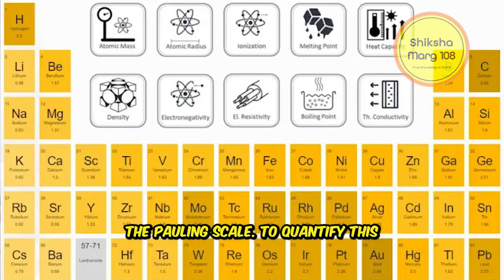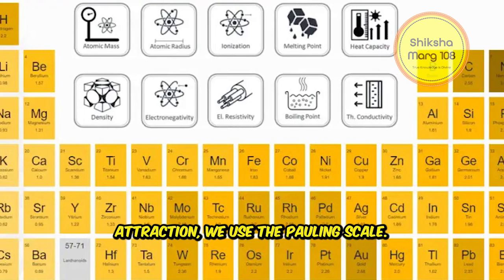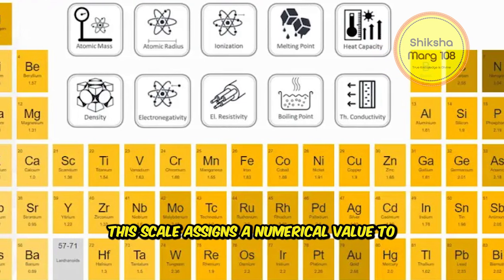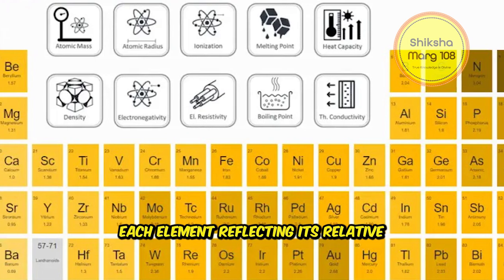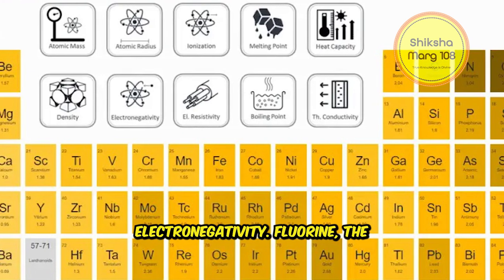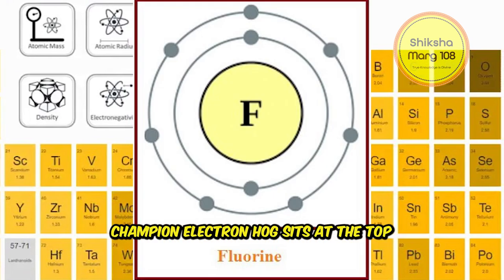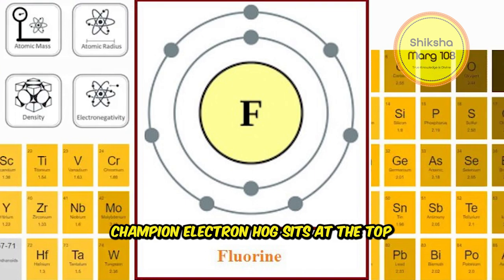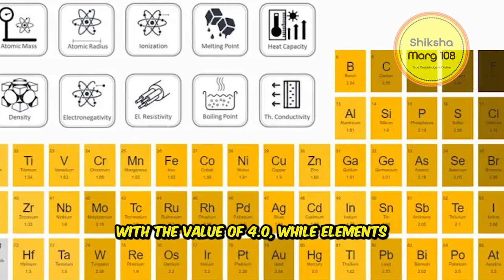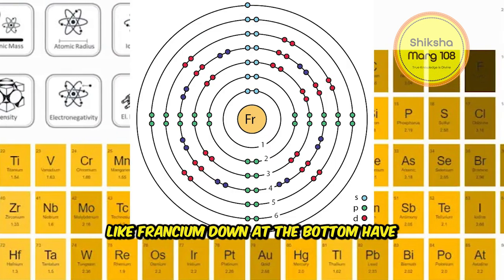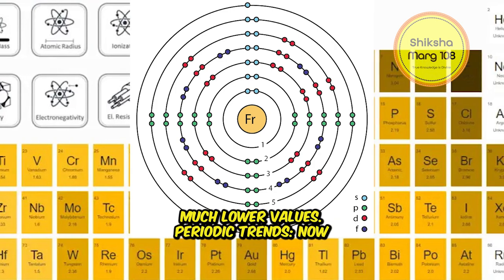The Pauling Scale: To quantify this attraction, we use the Pauling Scale. This scale assigns a numerical value to each element, reflecting its relative electronegativity. Fluorine, the champion electron hog, sits at the top with a value of 4.0, while elements like francium at the bottom have much lower values.